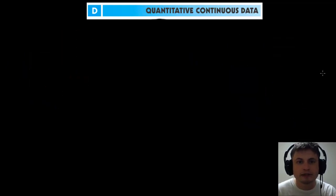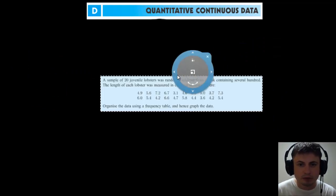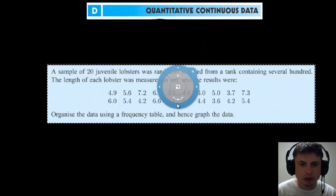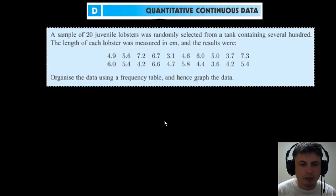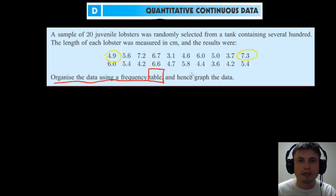Let's take a look at one of the examples from the book, from subchapter D. Basically, it's about lobsters. A sample of 20 juvenile lobsters was randomly selected from a tank, and this is their length in centimeters. One lobster was really tiny, it was only 4.9 centimeters, and then one of them was really long, 7.3 centimeters, and so on. The question asks us to organize our data using a frequency table. This is what we did last time. I'm not going to do it by hand, but what you should be getting is something like this.